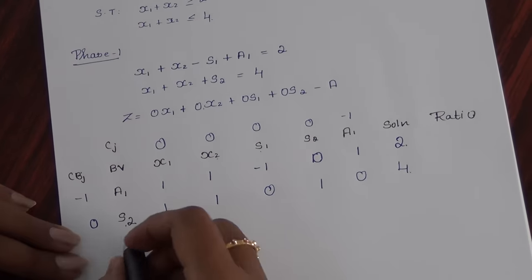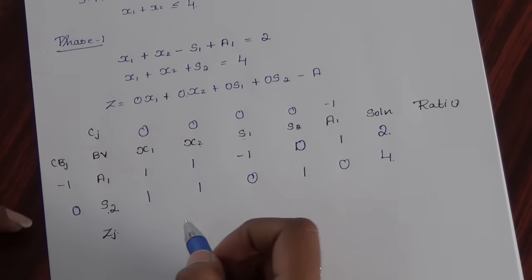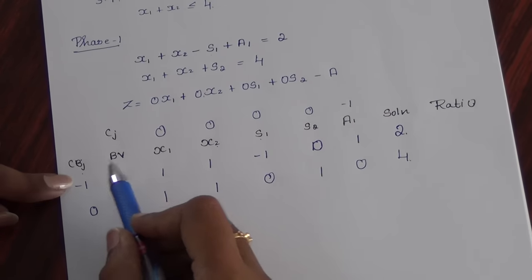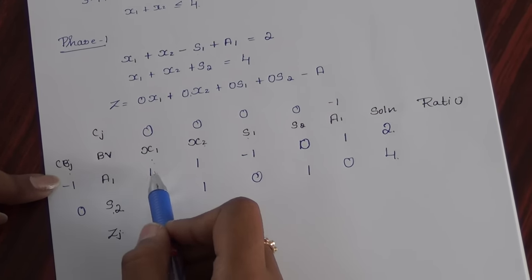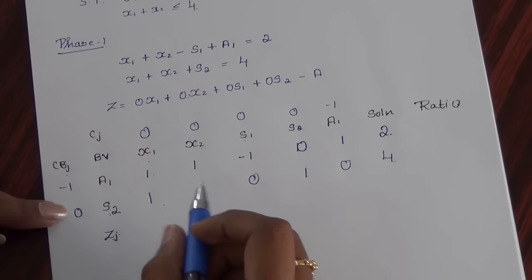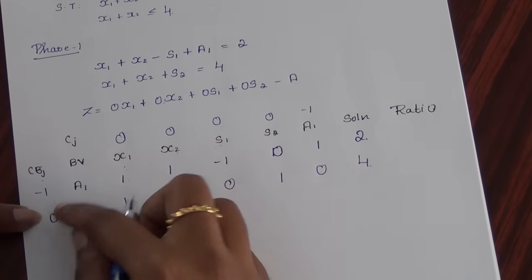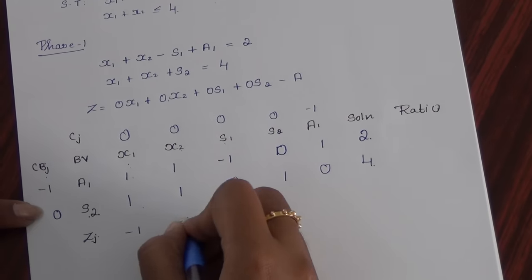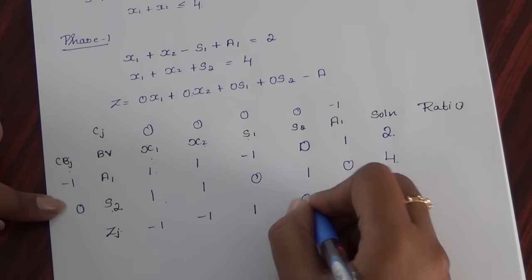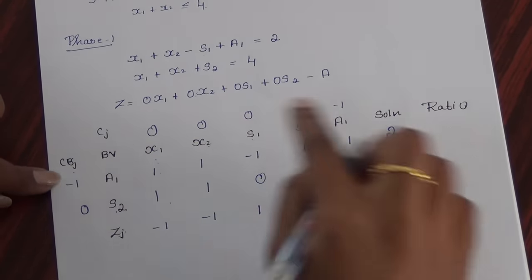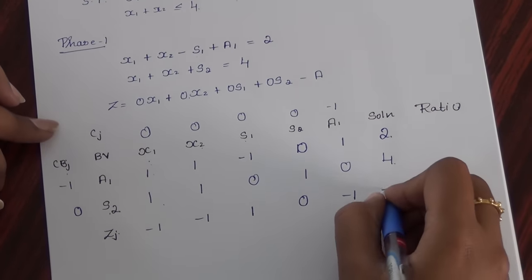After filling the table, I calculate Zj. Zj is cbj multiplied by the column variable. So: minus 1 times 1 plus 0 times 1 gives minus 1 for x1. For x2, again minus 1 times 1 plus 0 times 1 gives minus 1. Similarly for the other columns: 1, 0, minus 1. For the solution: minus 2 plus 0 times 4 gives minus 2.